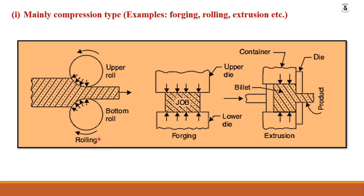In rolling, forging, and extrusion, compression stress is used to convert material into the desired shape and size. In the extrusion process, by changing the cross-sectional area of the die you can get different shaped products. If you want to make a rod, pipe, or other products like T-sections and I-sections, all of these can be made with the help of the extrusion process.